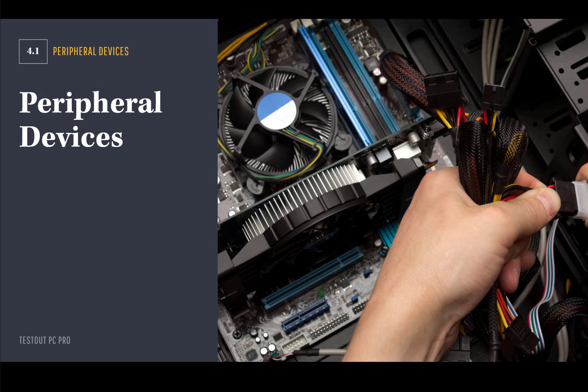So we're talking about Chapter 4, and Chapter 4 is Peripherals. When you hear the word peripheral, what do you think of? You have your CPU, and peripherals are going to be all of those things that you connect into it. So we're going to go through and talk about peripherals.